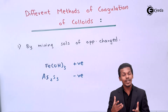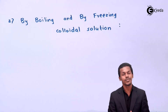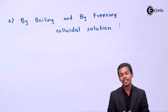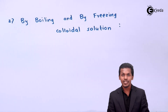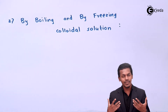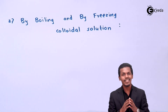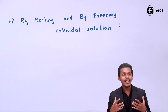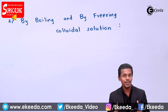The next method by which we can coagulate colloidal particles is by boiling and by freezing the colloidal solution. The colloidal particles are surrounded by the dispersed medium, and they are also associated with oppositely charged species. When we boil the solution, the charged species associated with the colloidal particles get separated, causing the colloidal particles to associate with each other, forming larger particles. This is how coagulation takes place through boiling.